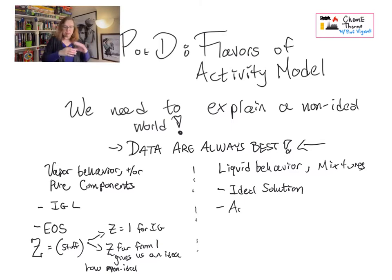We talked about that before. When ideal solution doesn't work, we turn to what's called an activity model. Just like an equation of state gives you deviations from ideal gas, an activity model gives you an idea how far you are deviating from ideal solution.